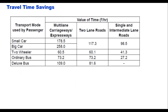Travel time saving is generally relevant for passengers of cars, two-wheelers, and buses. The value of travel time saving is given in a table: for a small car on multi-lane carriageway or expressway it is 178.5 rupees per hour, and similar values apply for two-lane, single and intermediate lane roads. For a big car it is 258 rupees on multi-lane highways. Similar values are provided for two-wheelers, ordinary bus, and deluxe bus.